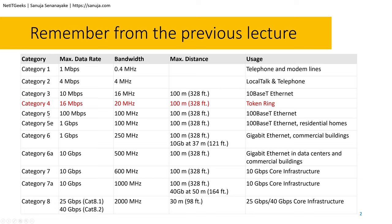We now have Cat 5, Cat 5e, Cat 6, Cat 6a, Cat 7, 7a, and 8 in the market. From Cat 5 to Cat 6a, these categories are the most common cables used today in the networking industry.